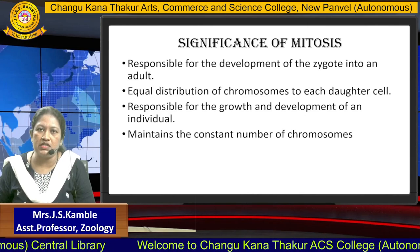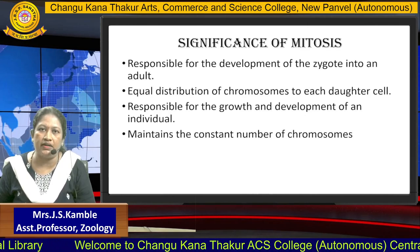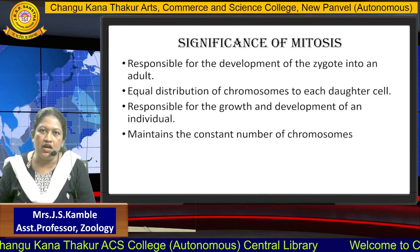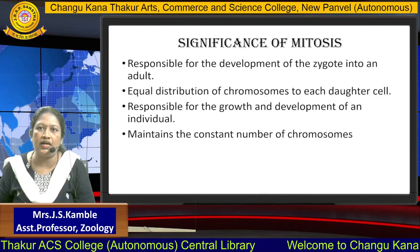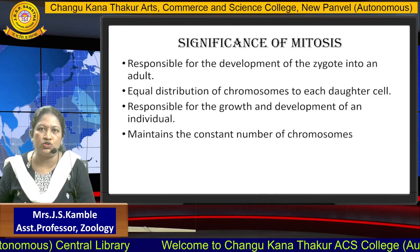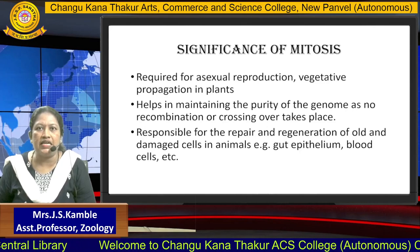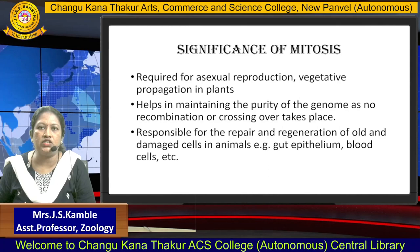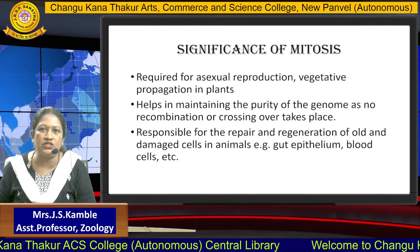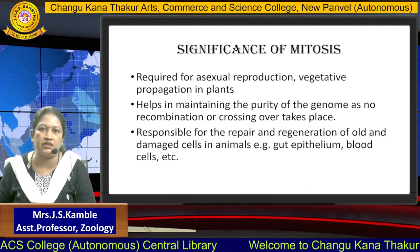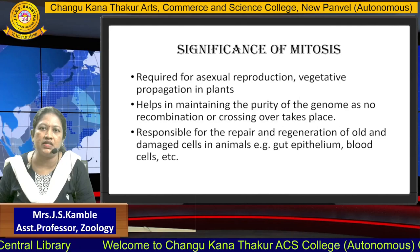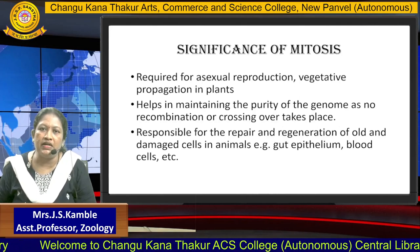Mitosis is responsible for the development of the zygote into an adult. It ensures equal distribution of chromosomes to each daughter cell. Mitosis is responsible for the growth and development of an individual, and it also maintains the constant number of chromosomes. Mitosis is required for asexual reproduction and vegetative propagation in plants. It helps in maintaining the purity of the genome as no recombination or crossing over takes place. It is also responsible for the repair and regeneration of old and damaged cells in animals — for example, gut epithelium, blood cells, etc.